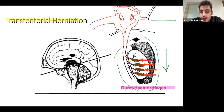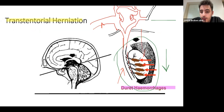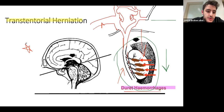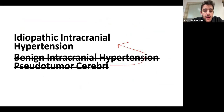For transtentorial central herniation: the basilar artery continues to supply the circle of Willis. When ICP increases, it presses down on the brainstem, pushing the basilar artery down with it. However, the basilar artery is tethered by the circle of Willis, so all the pontine arteries branching from the basilar artery get torn, causing direct hemorrhages. This is relatively important and you should know it.